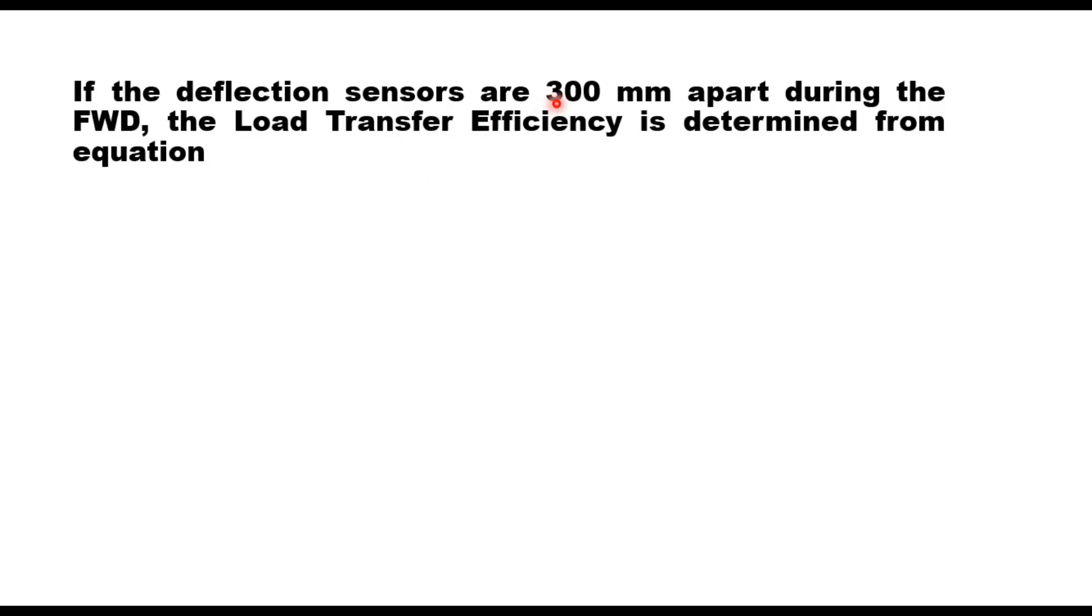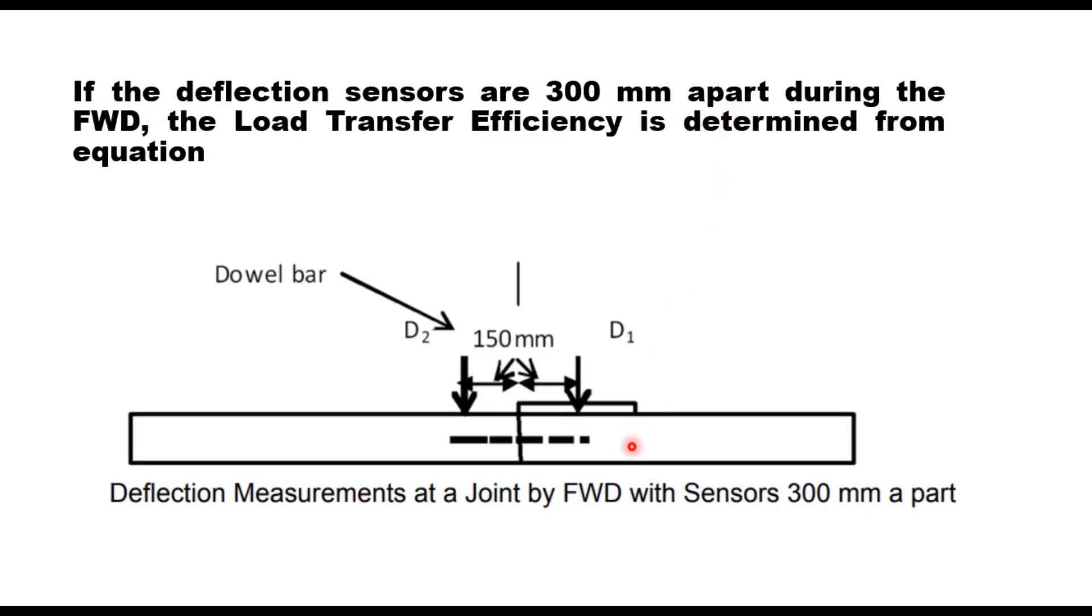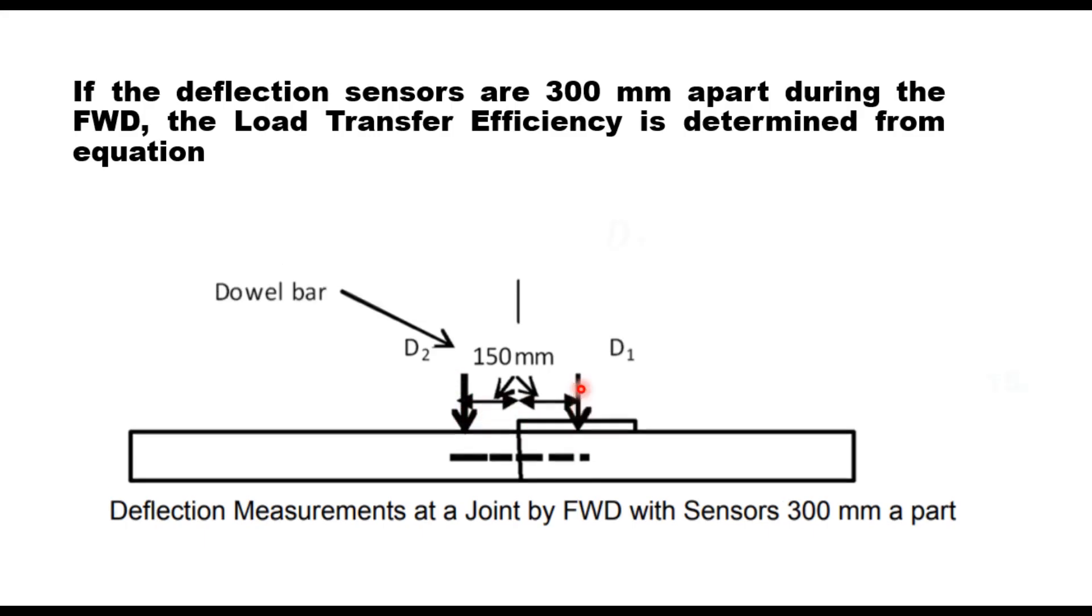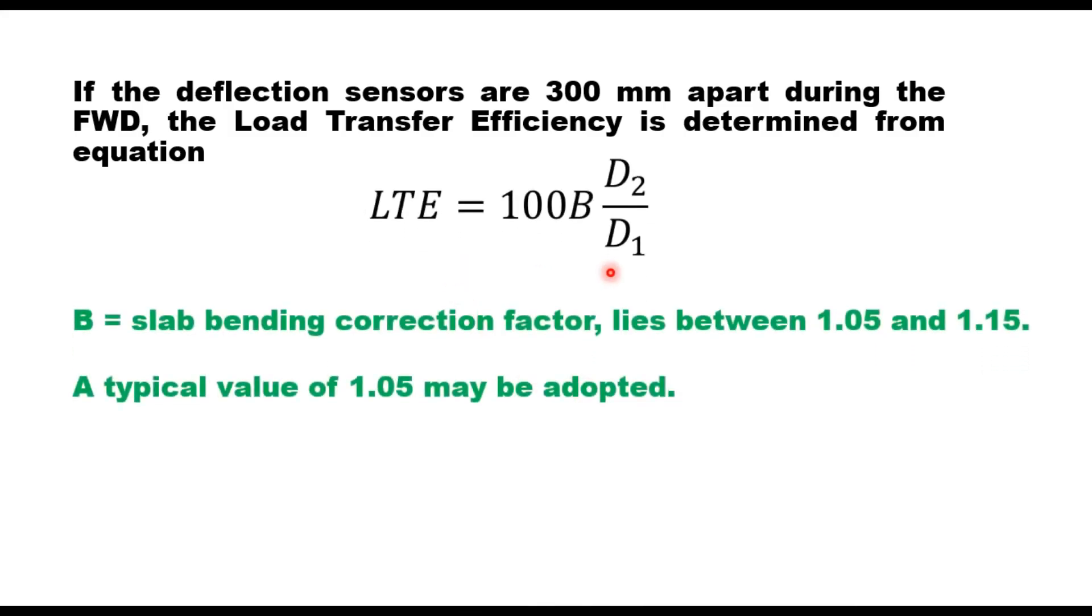If the deflection sensors are 300 mm apart during FWD test like this, the first sensor is here and second sensor is on the slab which is unloaded. So this is 300 mm. Then in that case load transfer efficiency is estimated using this equation. A factor here, a slab bending correction factor is applied. And the value of this lies between 1.05 and 1.15. A typical value of 1.05 is suggested in IRC 117.